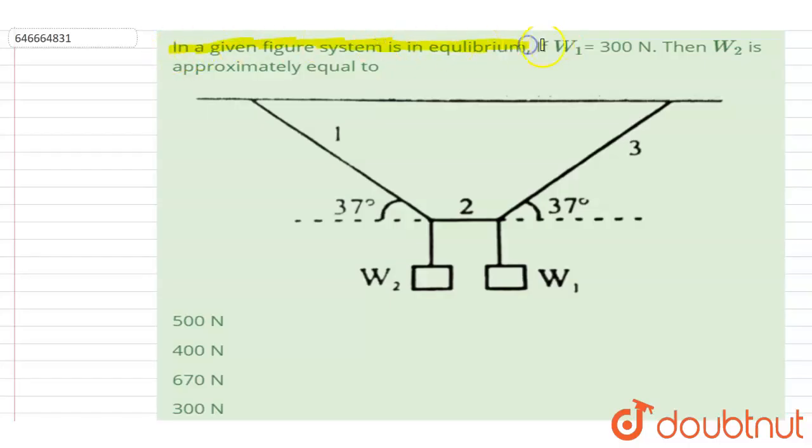The system is in equilibrium. W1 is 300 N and W2 is approximately equal to—you have to find out W2.